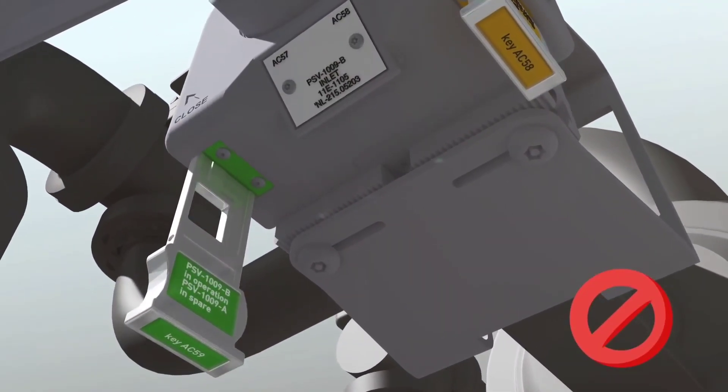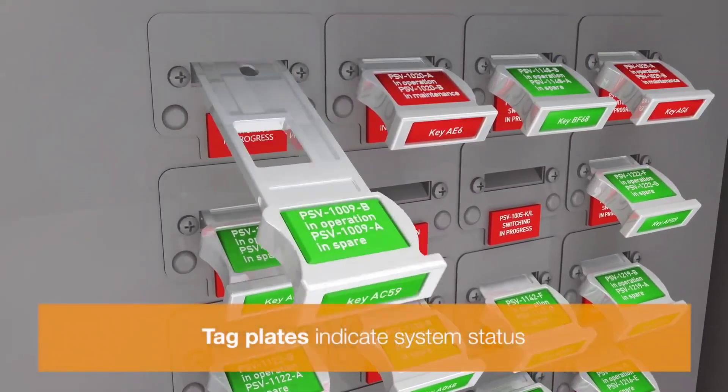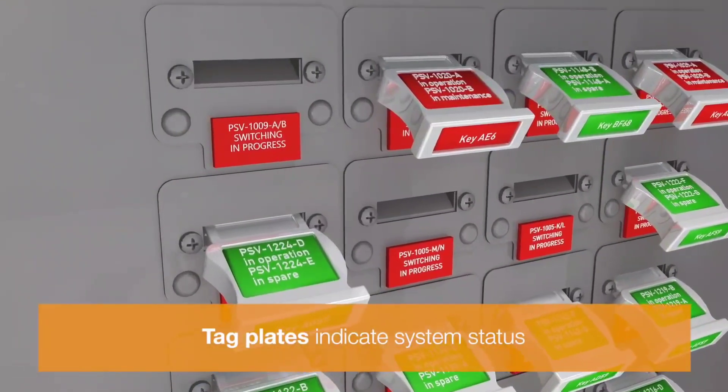When a key is removed, the cabinet tag plate shows that the valve system is being operated.